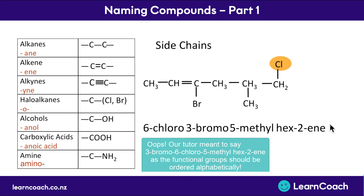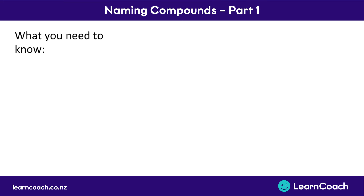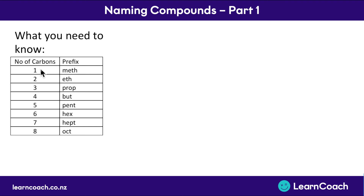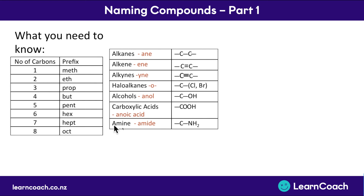Here's what you need to know as a summary. Prefixes: 1 carbon is meth, 2 is eth, 3 is prop, 4 is but, 5 is pent, 6 is hex, 7 is hept, 8 is oct. These prefixes go before the molecule type. A straight carbon chain with nothing extra is an alkane - add 'ane'. A double bond is an alkene - add 'ene'. A triple bond is an alkyne - add 'yne'. For haloalkanes, add chloro or bromo in front of the name. For an alcohol with an OH group, add 'anol' to the end. For a carboxylic acid with a double-bonded O and OH group always on the end, add 'anoic acid'. For amines with an NH2 group, add 'amide' to the end.